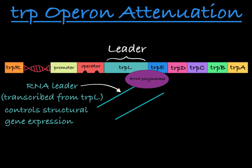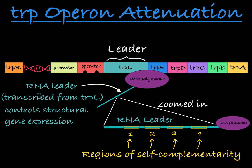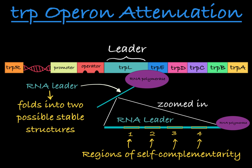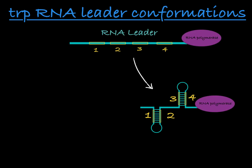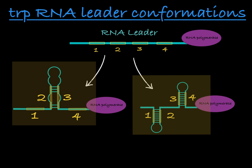This leader sequence has some regions of self-complementarity, highlighted 1, 2, 3, and 4. When RNA has regions of self-complementarity, it will often fold in on itself to form stable structures. There are two stable conformations for this RNA leader sequence. Either regions 1 and 2 connect via base pairing and 3 and 4 do the same, or we see an alternate conformation in which regions 2 and 3 bond complementarily. These are the two options for stable conformations of the RNA leader.